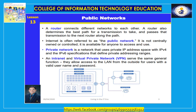At the destination, packets are reassembled into the original data transmission. A router connects different networks to each other and determines the best path for a transmission to take, passing the transmission to the next router along the path. You may be familiar with residential broadband routers or enterprise-level routers used in a company or school LAN. However, high-speed internet backbone routers must be powerful enough to handle enormous amounts of data streaming through the backbone at speeds of gigabytes per second.